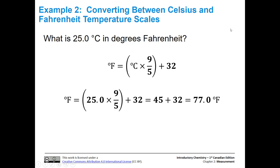Now let's go the other way. We have 25°C and want to convert it to Fahrenheit. We use the other equation: plug in 25°C, multiply by nine-fifths to get 45, then add 32, giving us 77.0 degrees Fahrenheit.